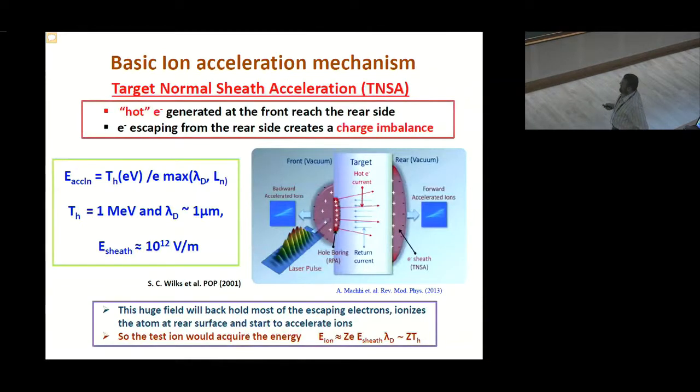If you see the ion energy is simply dictated by the temperature of the hot electrons. So, if you achieve hot electron temperature more and more one can get high energy. Here also a few MeV easily depends again on the different laser parameters and target geometry.